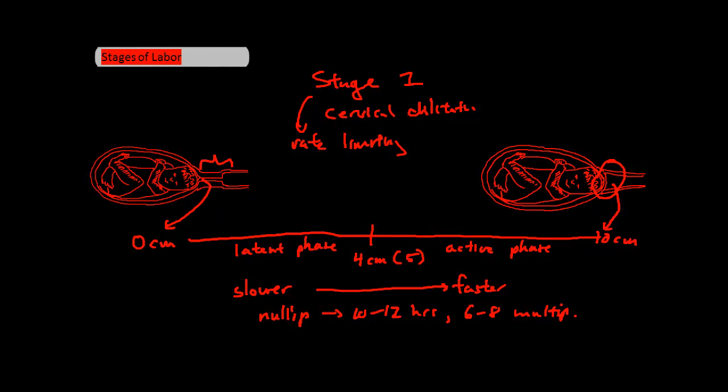Now, one other thing I just want to throw in is the three Ps: Power, passenger, and pelvis. These are more or less self-explanatory, and you've probably heard them in medical school ad nauseum. But they basically tell you whether you will have a vaginal delivery.